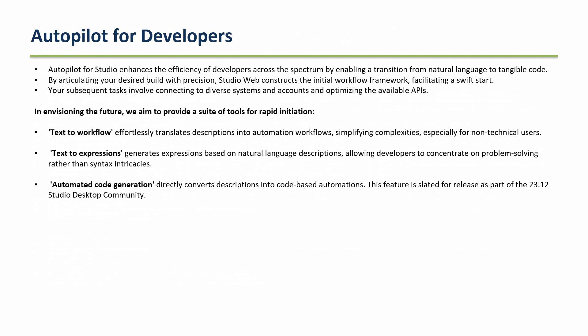Talking more about what is there for developers: you can generate text-to-workflow. If you have an automation idea but don't know what activity to use, specifically in Studio Web, you can just write your automation and Autopilot will generate it for you. You can also convert text to expressions, and for experienced developers, Autopilot can generate automated code in coded automation — a feature released in the 23.12 version of Studio Desktop Community.